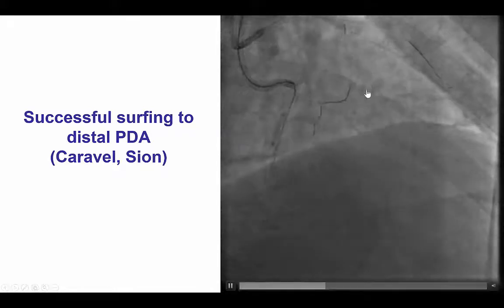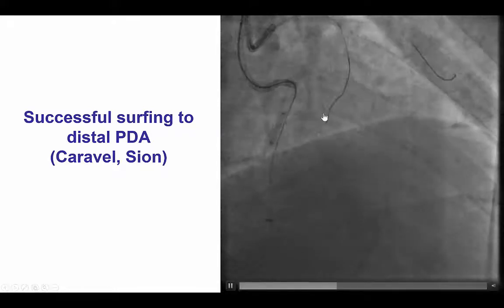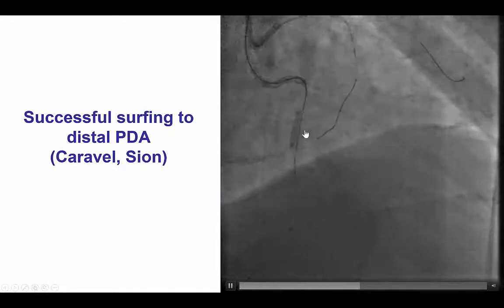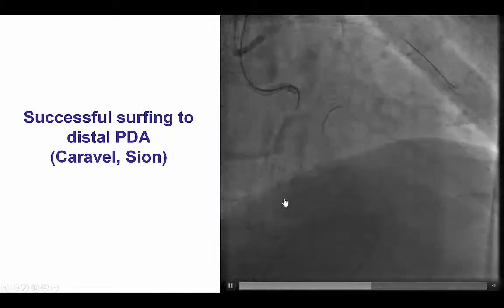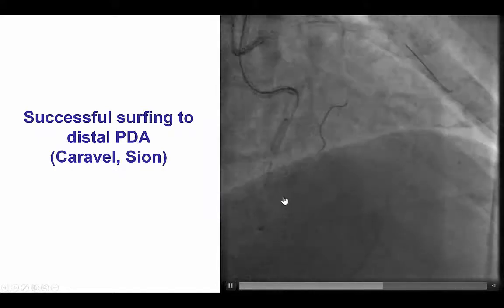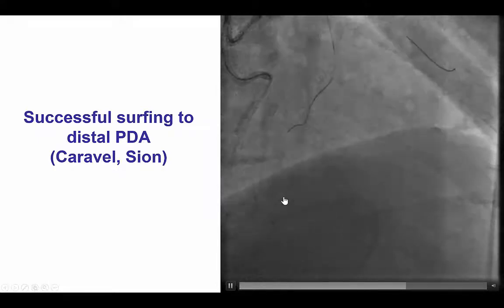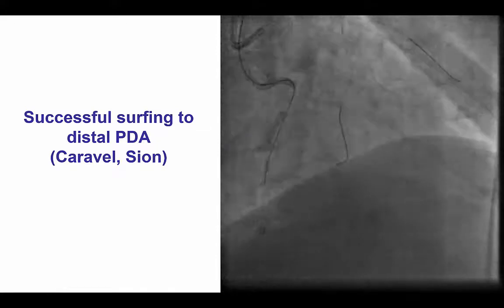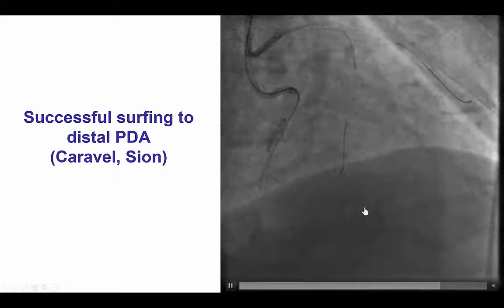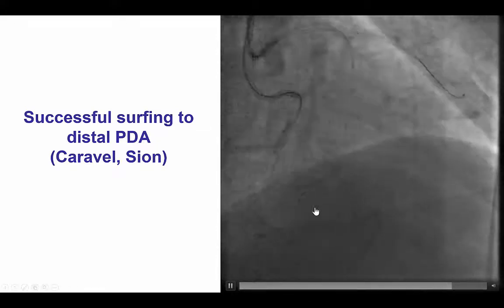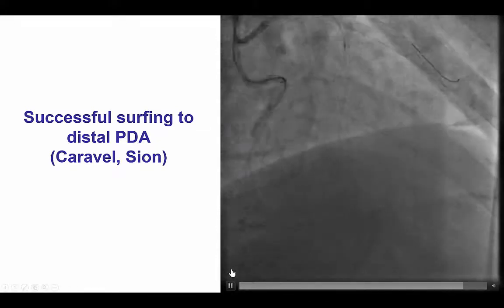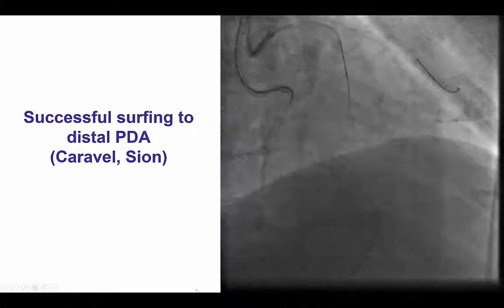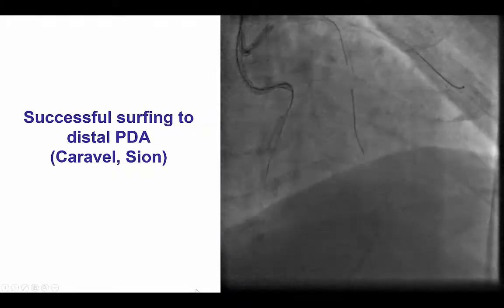The wire went into various branches — that was unsuccessful — and was redirected several times. Eventually, a pathway was found where the wire nicely flew down, following into the distal right coronary artery.